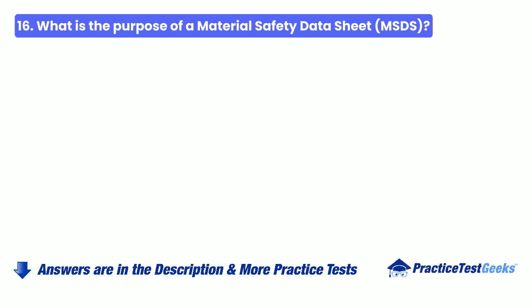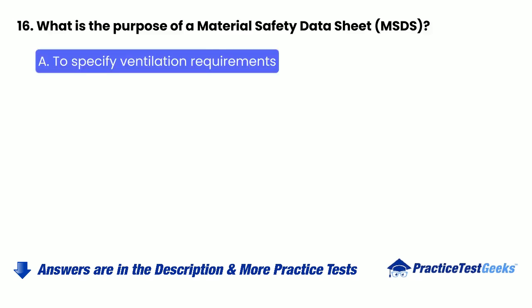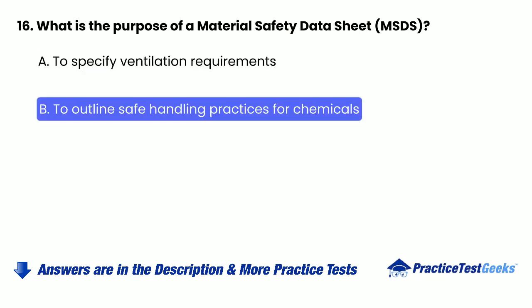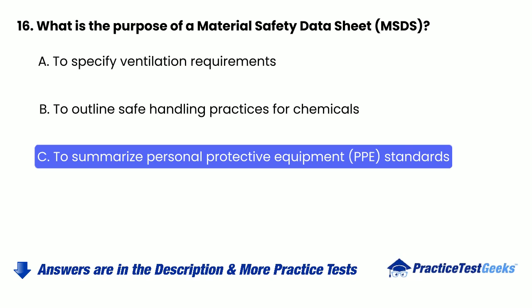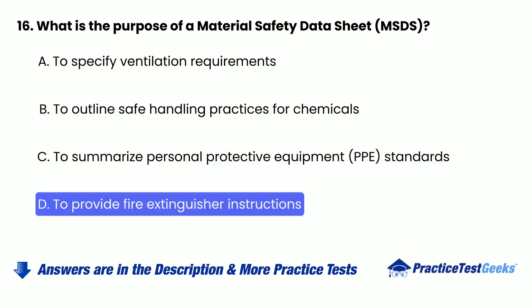Question 16: What is the purpose of a material safety data sheet (MSDS)? A. To specify ventilation requirements. B. To outline safe handling practices for chemicals. C. To summarize personal protective equipment (PPE) standards. D. To provide fire extinguisher instructions.